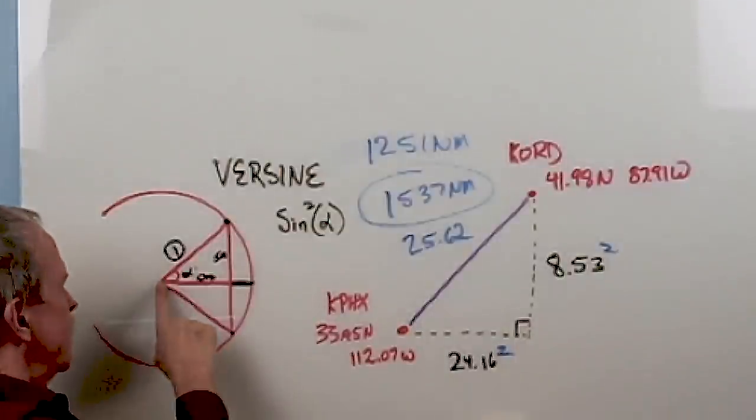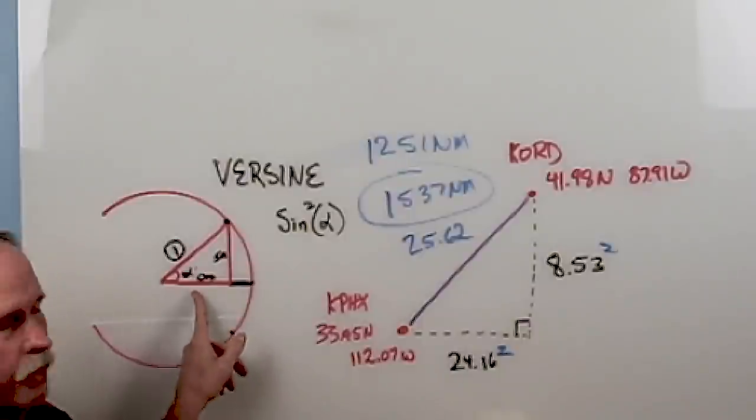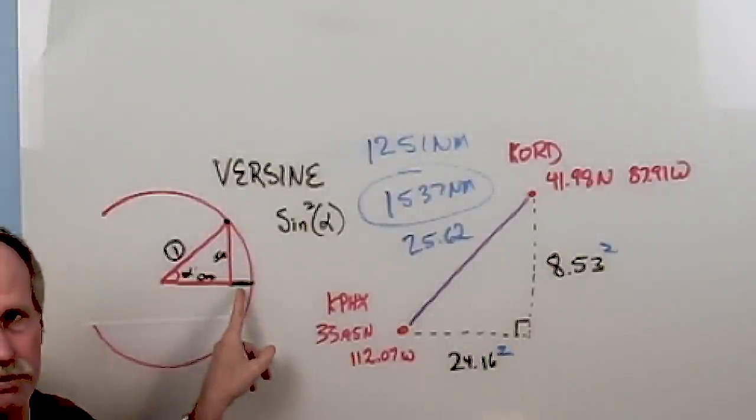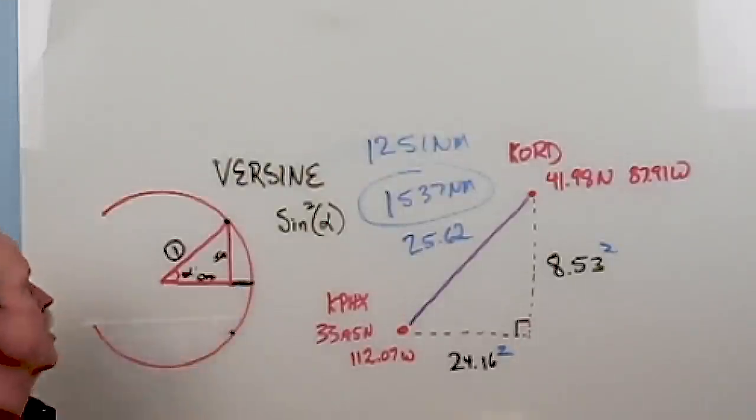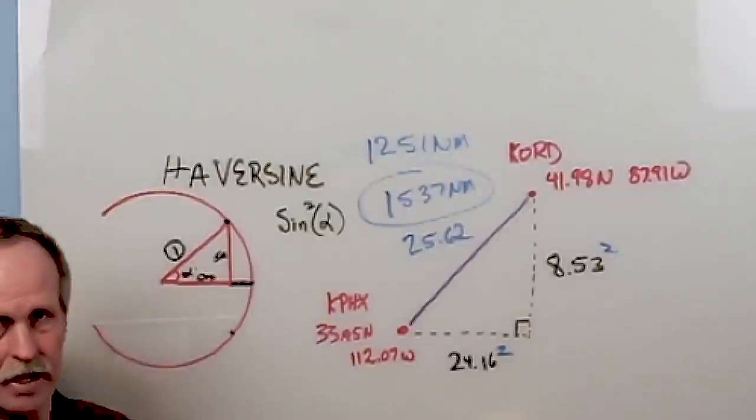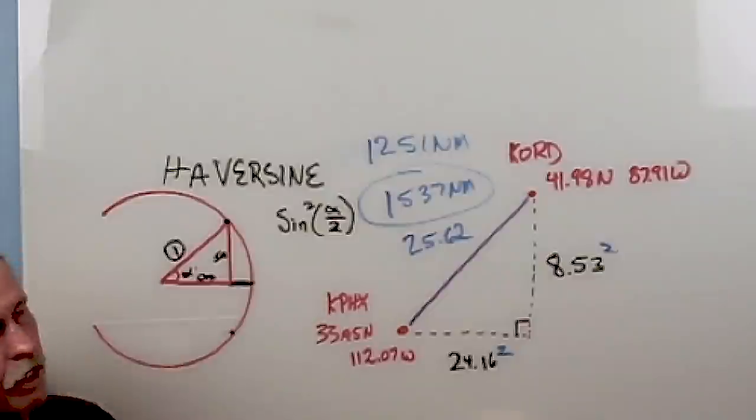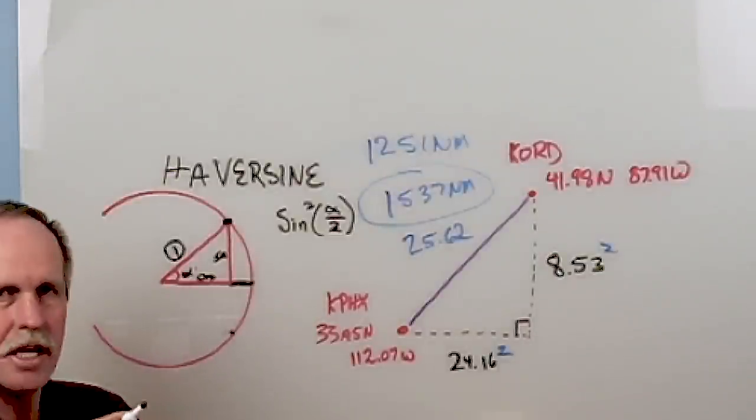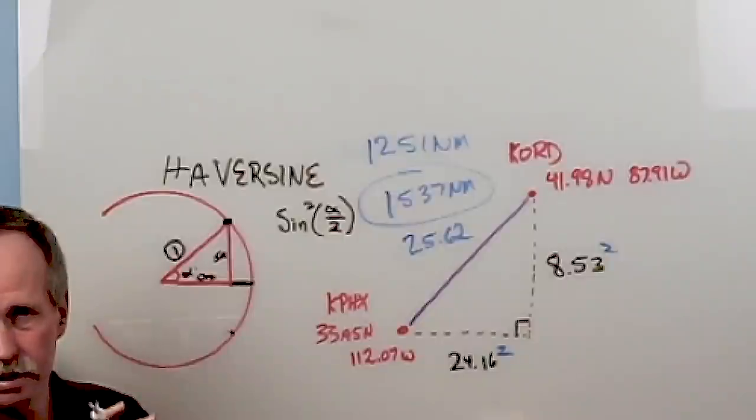If you were to take this angle out and just talk about the original angle alpha and that full versine, this now would be the versine of half the angle. And that has a special name. It's called a haversine. And the formula for a haversine is the sine square of the angle divided by two. Well, let's see how the haversine is used to determine a great circle distance, which is what we're talking about here. It's the shortest distance between any two points on the surface of the earth.